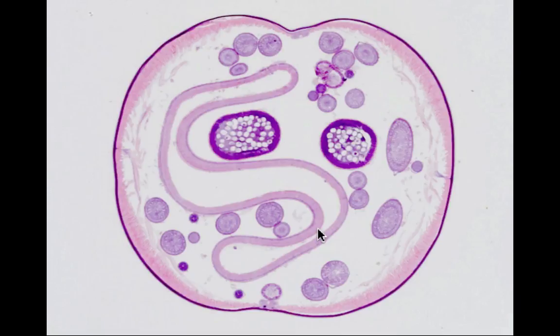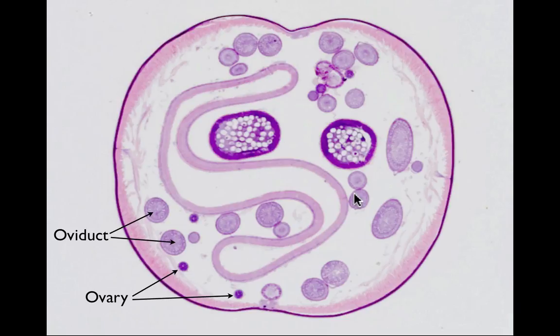The many small circular structures are part of the female reproductive system. The smallest are part of the ovary. This is once again a long tube, and the cells that will become ova, or eggs, originate here. As the cells develop and grow, they move into the oviduct. The diameter progressively increases as one moves from the ovary to the uterus. The ova continue to develop as they move through the oviduct. Once they have finished development and have been fertilized, they move into the uterus.